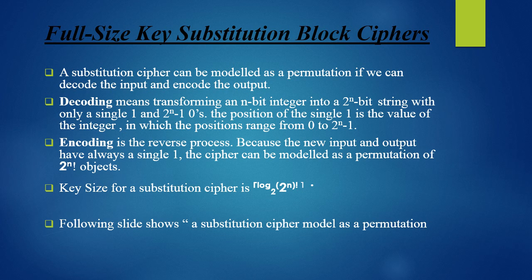Decoding means transforming an n-bit integer into a 2^n-bit string with only a single 1 and (2^n - 1) zeros. The position of that single 1 represents the value of the integer, with positions ranging from 0 to 2^n - 1. For example, if we have a 2-bit block, decoding produces a 4-bit output with 3 zeros and a single 1, where the position of the 1 determines whether the number is 00, 01, 10, or 11. Encoding is the reverse process, and since the new input and output always have a single 1, the cipher can be modeled as a permutation of 2^n-factorial objects.